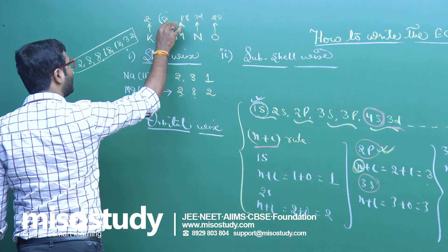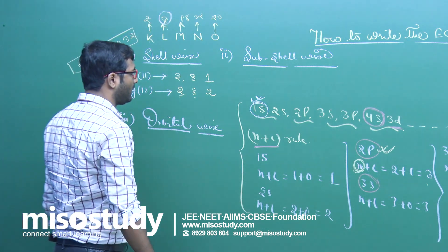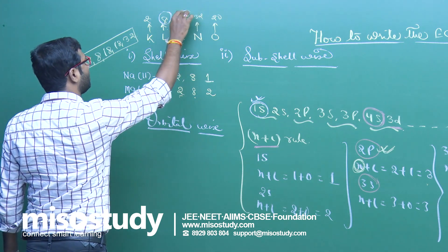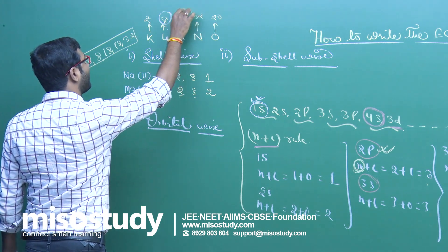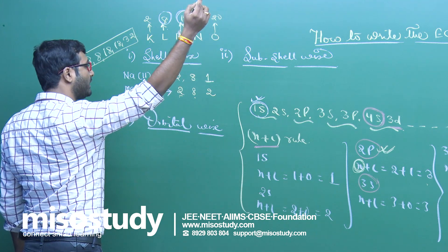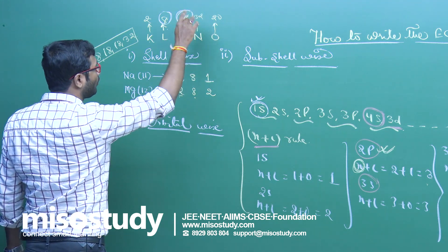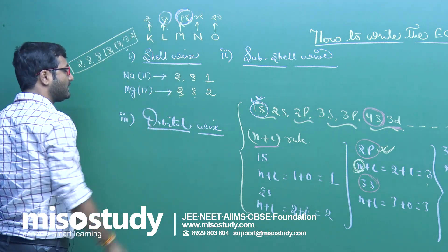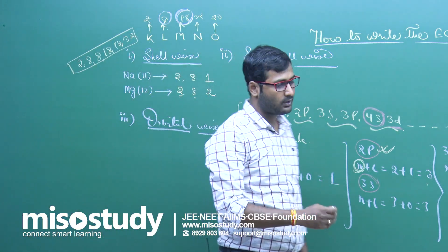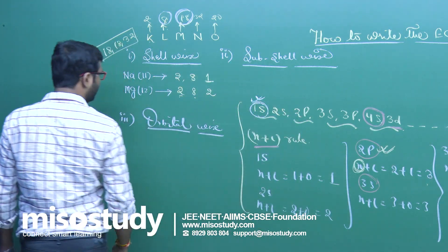Similarly, L can occupy a maximum of 8 electrons — it cannot occupy more than 8. M can occupy from 1 up to 18 electrons maximum; it cannot occupy 19 electrons. Minimum, it can occupy 0 electrons, meaning it is empty.